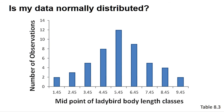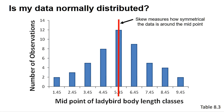Fortunately, there are a couple of other indicators we can assess. Normal data sets are symmetrical, so we can look at the skew value, which should be zero for a perfectly symmetrical data set. This is also why we find the mean and median are the same in normally distributed data. In general, a skew value between minus 2 and 2 can be consistent with a normal distribution.